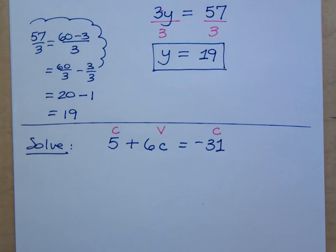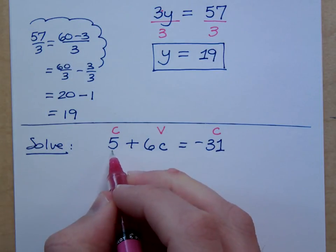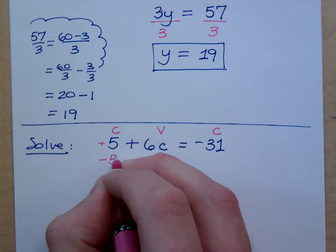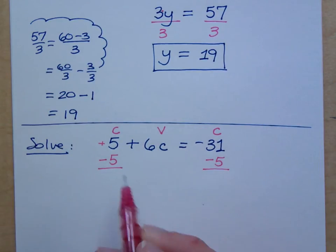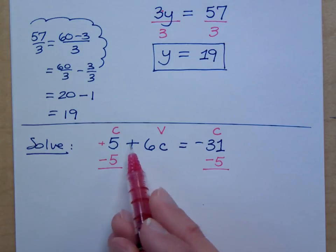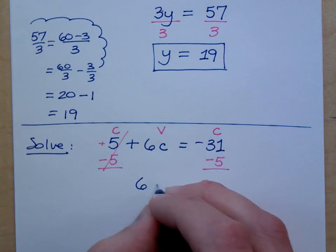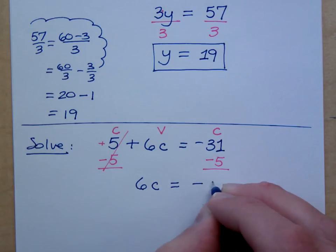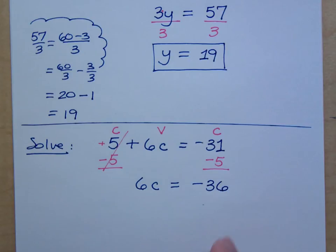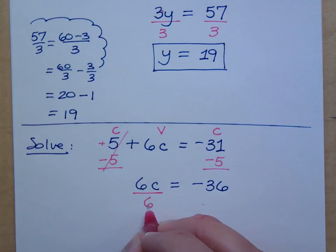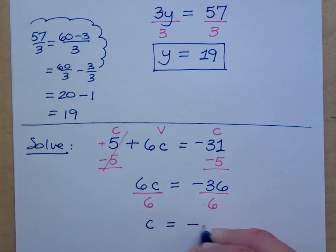A lot of students will choose to add. What is the sign of the 5 here right now? It's understood to be a positive, right? And the opposite of having a positive 5 is a negative 5. Keep in mind that this 5 is disconnected from the variable term because of the addition between them. So positive 5 and minus 5 become 0. I have 6c is equal to negative 36. How do I get c by itself? I don't want 6 of them, I just want 1. So I divide by the coefficient of c, which is 6. C equals negative 6.